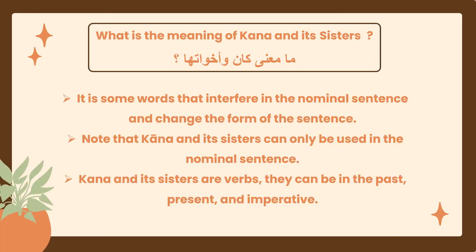What is the meaning of كان وأخواتها? It refers to some words that interfere in the nominal sentence and change the form of the sentence. Note that كان and its sisters can only be used in the nominal sentence. كَانَ وَأَخْوَاتُهَا are verbs; they can be in the past, present, and imperative.